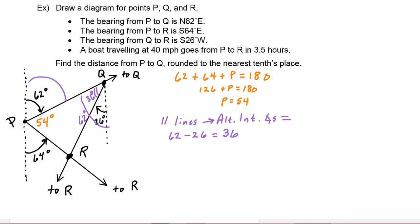Using the triangle sum theorem: 54 + 36 + angle R = 180 degrees. Since 54 + 36 = 90, angle R = 90 degrees, so we place a right angle symbol at R. Note that your sketch won't always be perfectly perpendicular — the sketch is really a work surface to use as you solve.